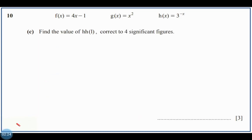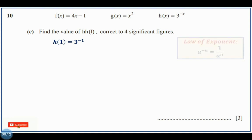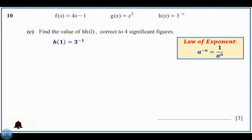Letter C: find the value of h(h(1)), correct to 4 significant figures. h is 3 raised to the power of negative x. Changing x with 1: h(1) = 3 to the power of negative 1. By the law of exponents, a to the power of negative n equals 1 over a to the power of n. So h(1) = 1 over 3.